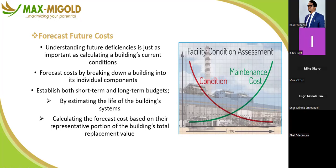At the end, you summarize how much is spent per room — bedroom, toilet, kitchen, living room — and arrive at a complete lump sum for the entire facility. That is how you break a building into individual components. Then establish both short and long-term budgets by estimating the life of building systems and calculating forecast costs based on their representative portion of the building's total replacement value.